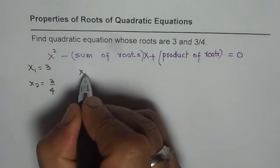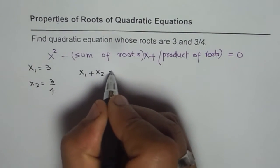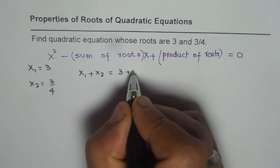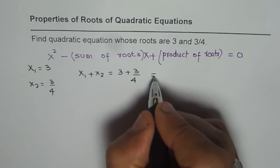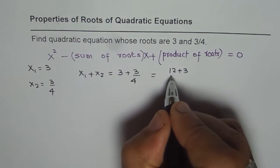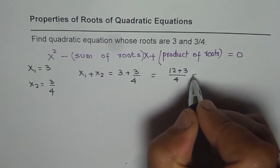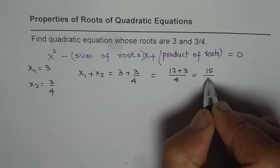So sum of roots are x1 plus x2 which is equal to 3 plus 3 over 4, and that is equal to 12 plus 3 over 4, that is 15 over 4.